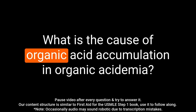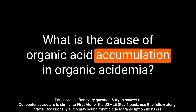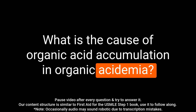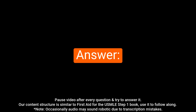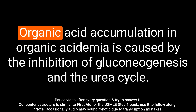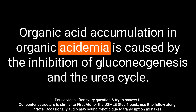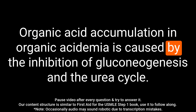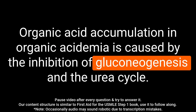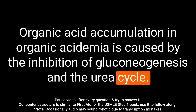Question: What is the cause of organic acid accumulation in organic acidemia? Answer: Organic acid accumulation in organic acidemia is caused by the inhibition of gluconeogenesis and the urea cycle.